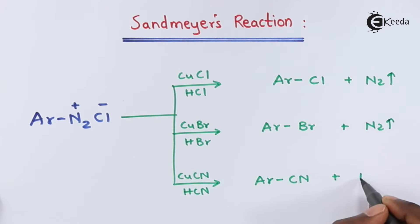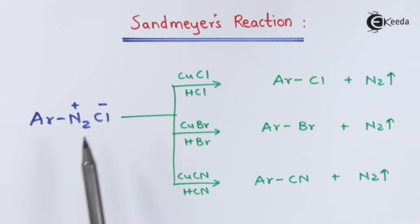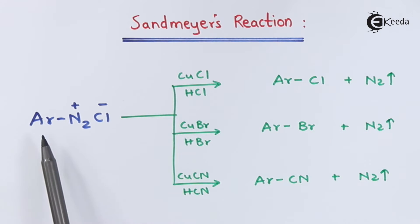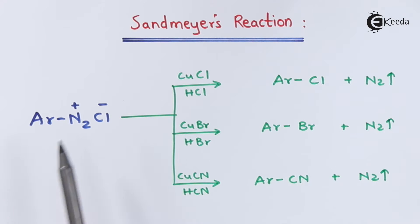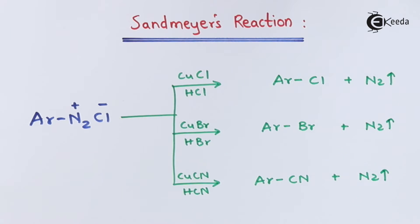So this is how we can easily convert aryl diazonium chloride into aromatic chloride, aromatic bromide, and aromatic cyanide. This is the general reaction, and all of these reactions are related to Sandmeyer's reaction. Now let me give you examples related to this general reaction.